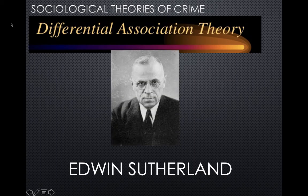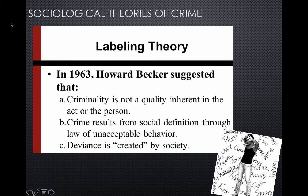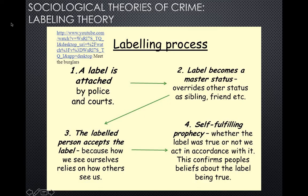Edwin Sutherland developed the differential association theory — there will be a question about his nine principles, so have this handy during the quiz. We also have the labeling theory: in 1963, Howard Becker suggested criminality is not a quality inherent in the act or person, and that deviance is created by society. Edwin Lemert identified four labeling steps: a label is attached; the label becomes a master status; the labeled person accepts the label; and finally, the self-fulfilling prophecy.